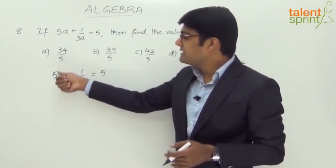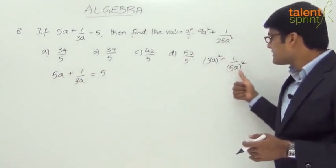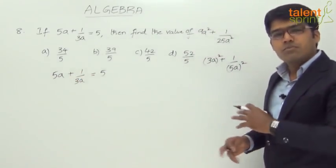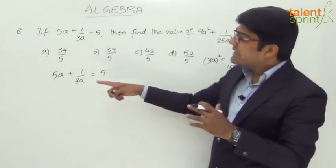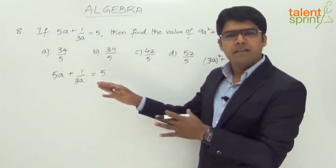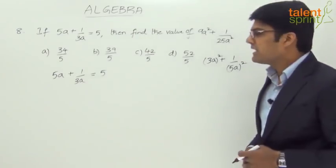But what we have here is quite opposite. We need 3a plus 1 by 5a, but it's given as 5a plus 1 by 3a. So let's try to modify it. Let's get that in the form of 3a plus 1 by 5a. I think once we get 3a plus 1 by 5a, it will become easy for us to get the required answer.